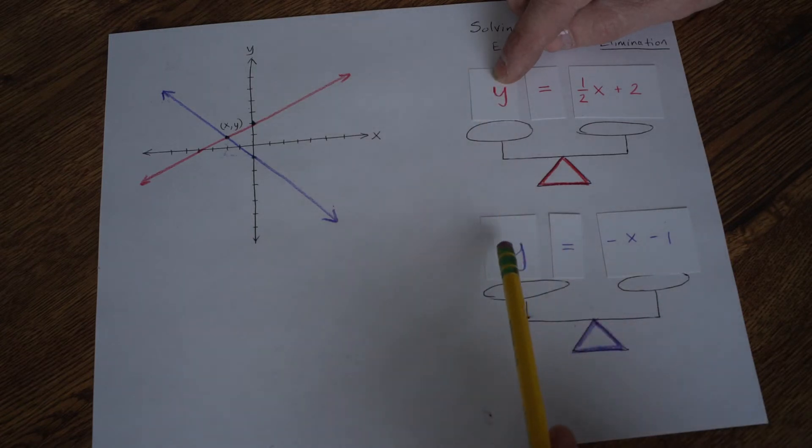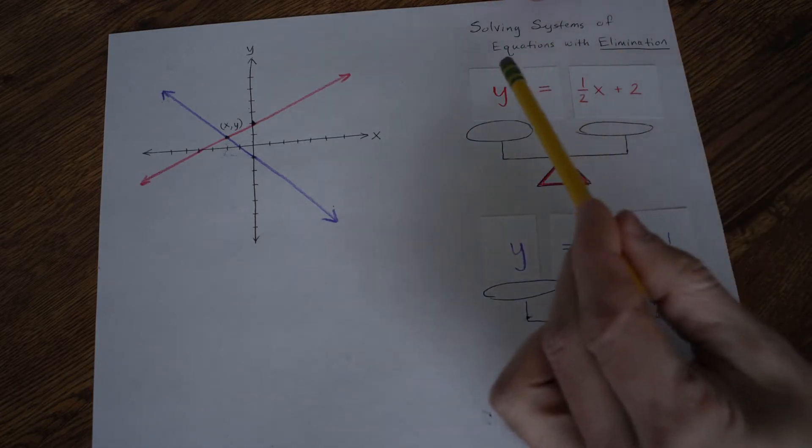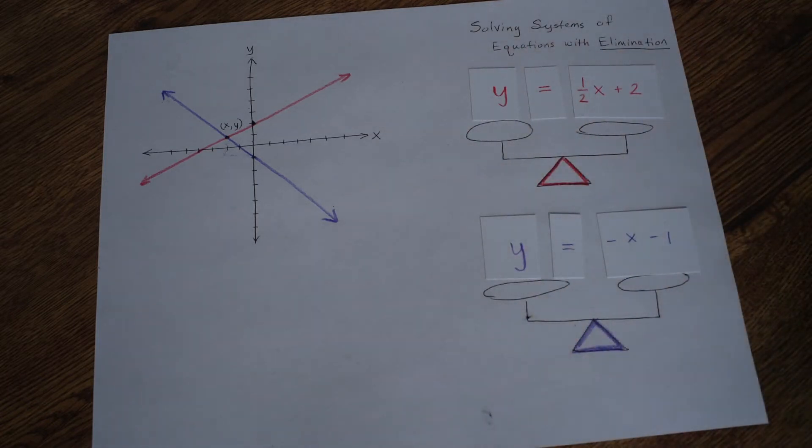Wouldn't it be nice if we added these together, and negative 1y plus 1y made 0y? Then the y's would be gone, and we could solve for x's. So that's what we're trying to accomplish here, is we're trying to eliminate either the y's or the x's here.